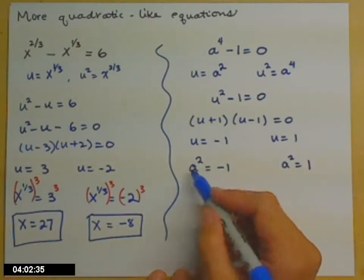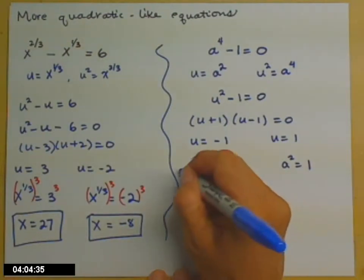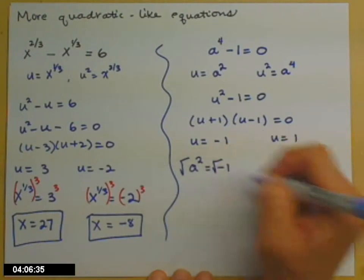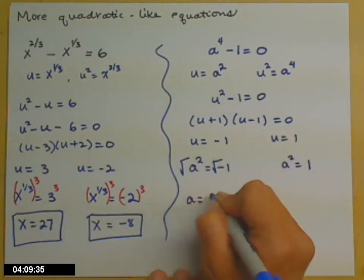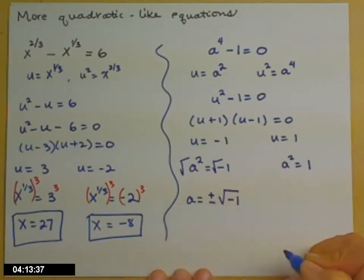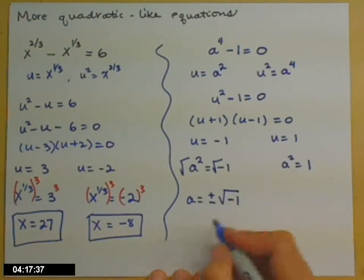And now I need to get all the way to a and I have a squared. So to do that, I'm going to square root both sides. Remember, when you square root both sides, you have to include the plus minus. So a equals plus or minus square root of negative one, which we know from the past we've defined as the imaginary number i.